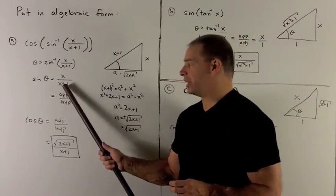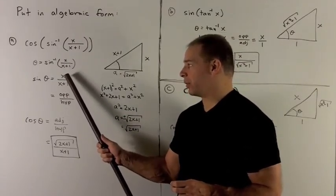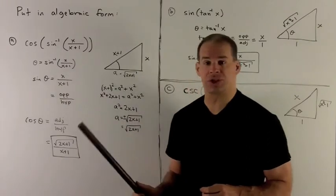So sine is going to be given by opposite over hypotenuse. Since I already have a fraction here, I'm just going to assign each of those to each thing here. And then we'll just solve for the other side.